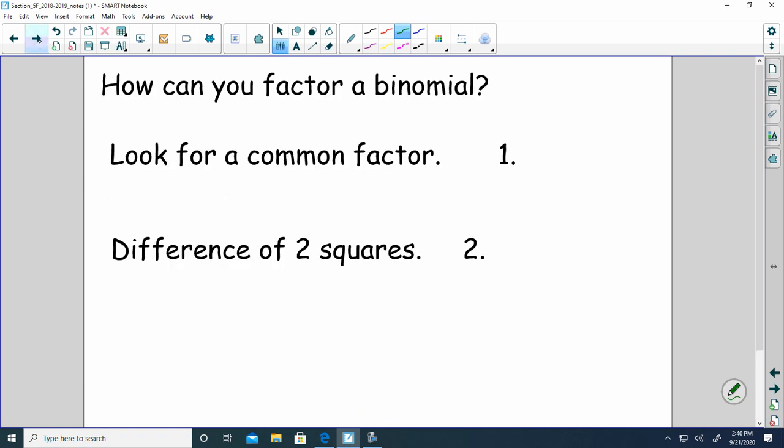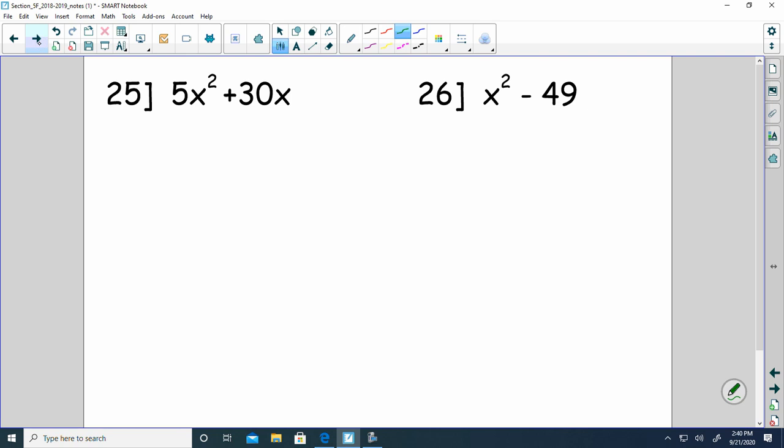How can you factor a binomial? Look for a common factor. Difference of two squares. Those are two things that we've just done. So on this first one, we have a common factor. I have a 5 and an x. If I factor 5x out of the first one, I'm left with x. Because 5x times x is 5x squared. And then 5x times 6 is 30x. So that can't be factored any further. Difference of two squares, x plus 7, x minus 7. Again, you want to be able to do these quickly when you look at them.